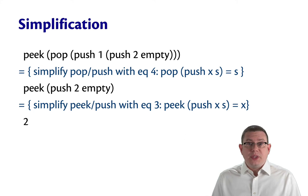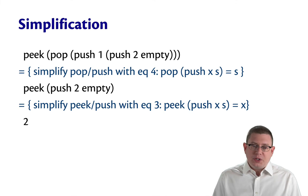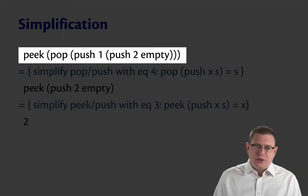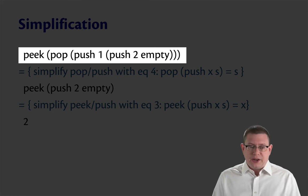You can use this kind of equational specification to do the proofs based on equalities that we've seen so far. So for example, suppose you wanted to prove that this complicated expression: peek, pop, push one, push two, empty, actually reduced to two.